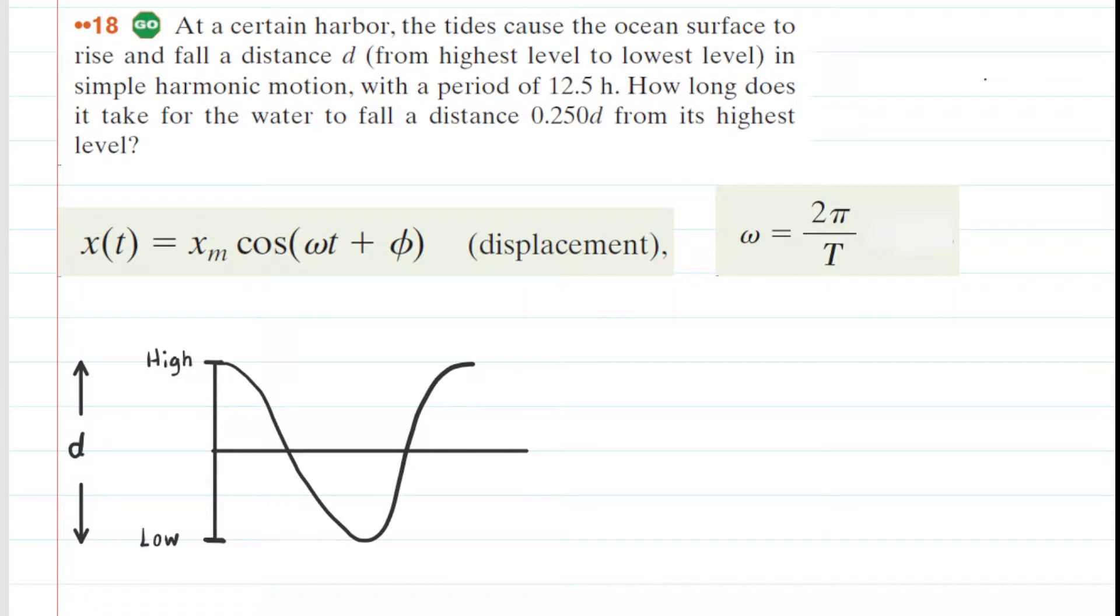If you haven't done so yet, make sure you pause the video and re-read the problem before listening on. The problem says that the tides cause the ocean surface to rise and fall a distance d from the highest level to the lowest level.